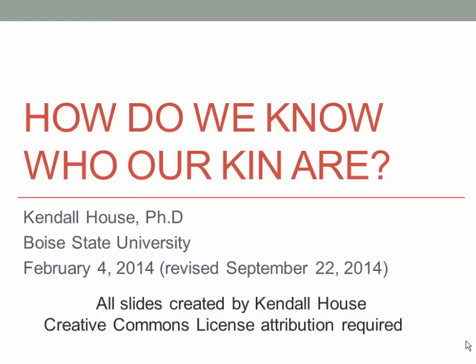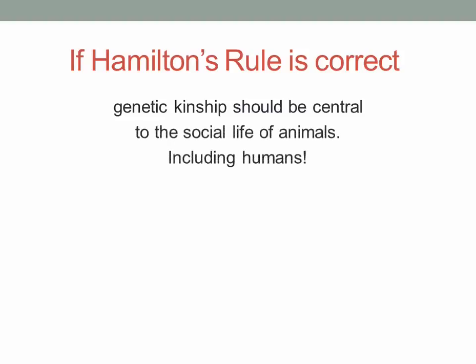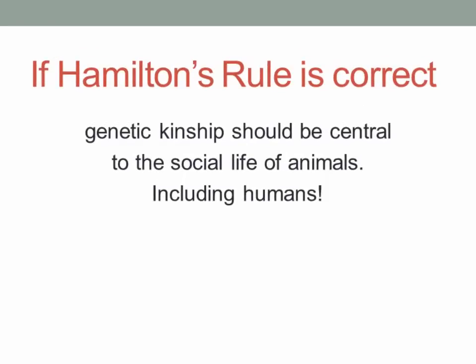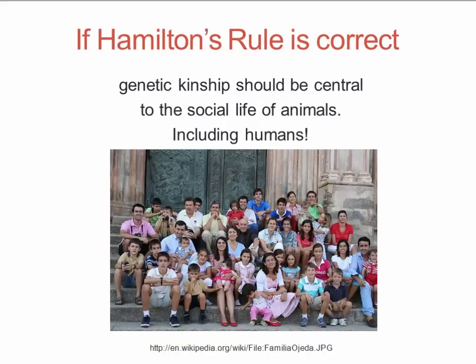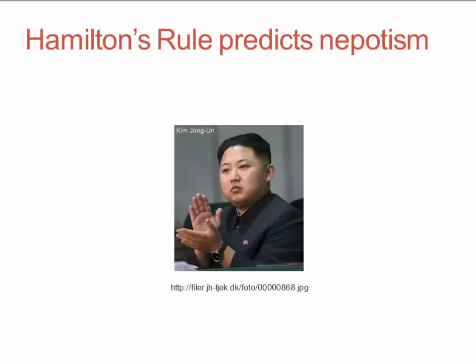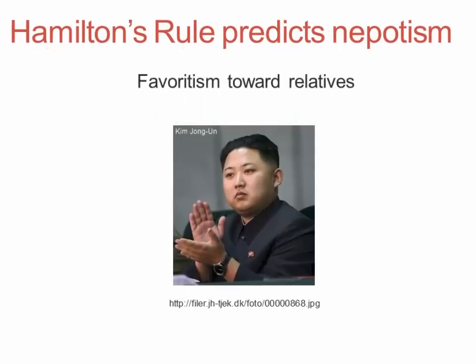This presentation is called 'How do we know who our kin are?' We're going to be looking at why that's an interesting question, and it's interesting because of Hamilton's rule. If Hamilton's rule is correct, then genetic kinship should be central to our social lives, and most of us should spend a lot of time with our close genetic kin and assist them.